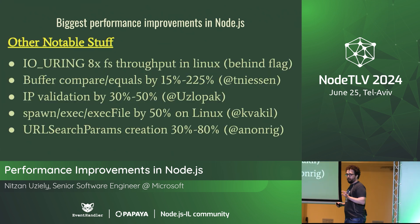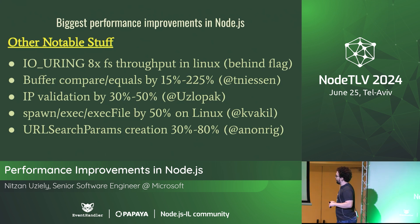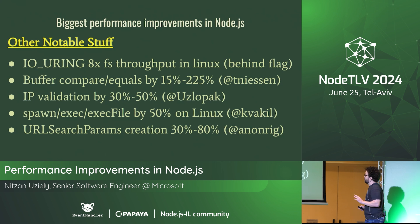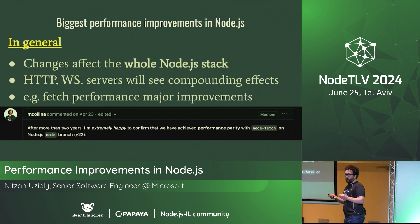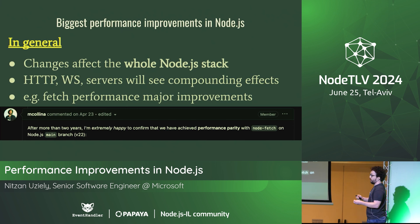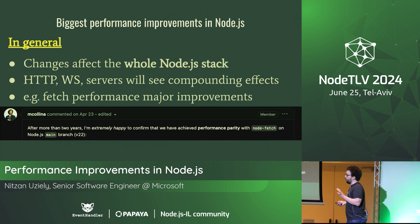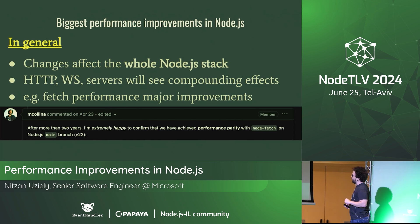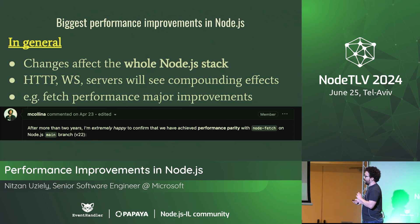A few more things: IOUring on Linux gives eight times throughput — still behind a flag. Buffer comparisons, IP validation, spawn/exec on Linux, URLSearchParams — really a lot of things were improved. These changes affected the whole Node.js stack: streams, buffers, web streams, file system. I can read this out loud: 'After more than two years, I'm happy to confirm we've achieved performance parity with node-fetch.' That's from late April. A lot of work has been done.